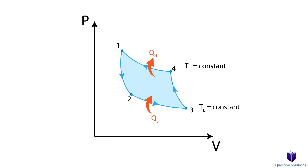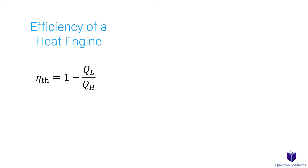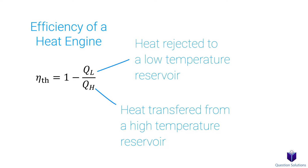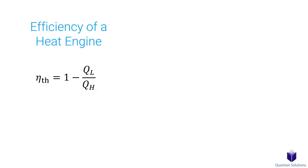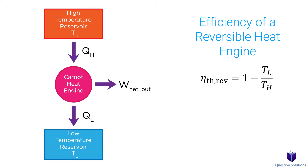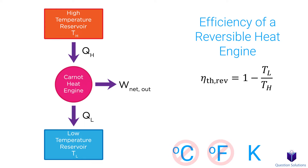Now let's dive into the efficiency of a Carnot engine. From the previous heat engines video, the efficiency of any heat engine is given by an equation where QH is the heat transferred to the engine from a high-temperature reservoir, and QL is the heat rejected to a low-temperature reservoir. For reversible heat engines like the Carnot engine, we can go one step further and write the efficiency as: η = 1 − TL/TH, where TH is the temperature of the high-temperature energy source and TL is the temperature of the energy sink. This relation is called the Carnot efficiency. In simple terms, the efficiency of reversible engines is a function of reservoir temperatures only.